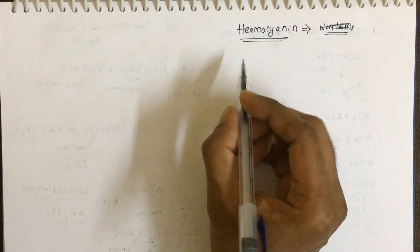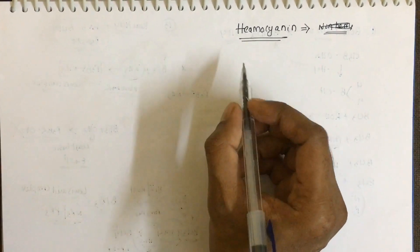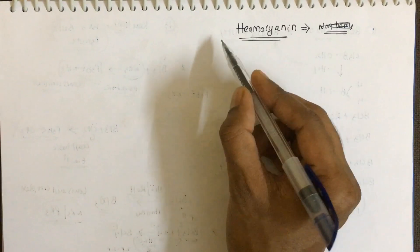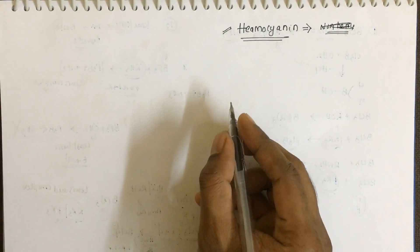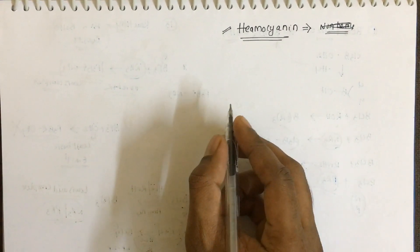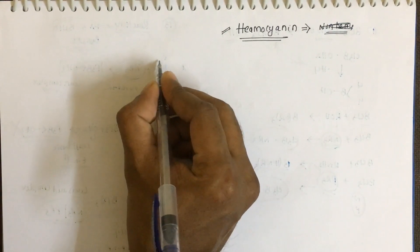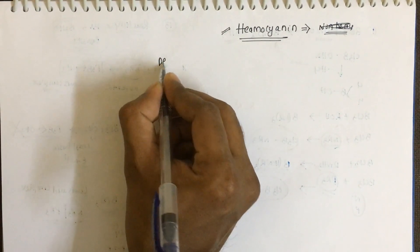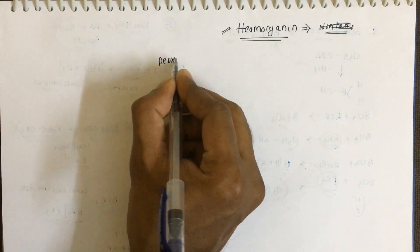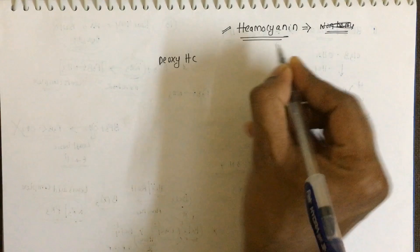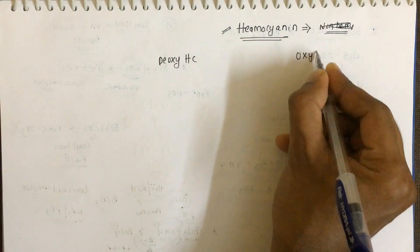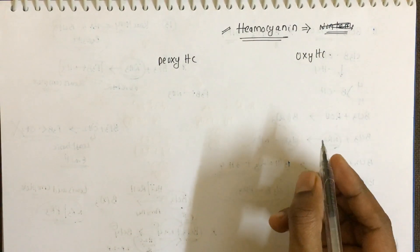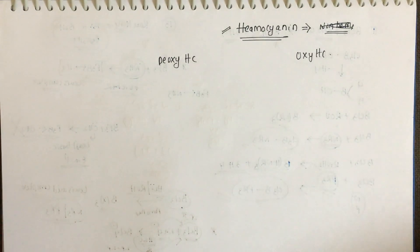We have already discussed hemerythrin. Now we are going to talk about hemocyanin. Hemocyanin is also very important. We will talk about the deoxy form first — deoxyhemocyanin — as well as oxyhemocyanin.